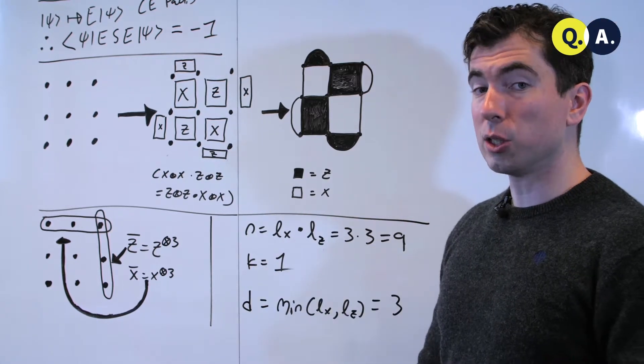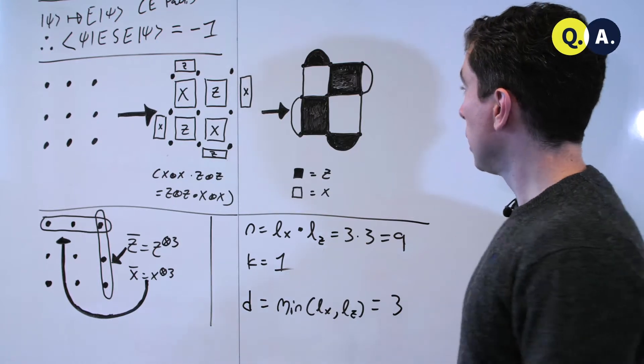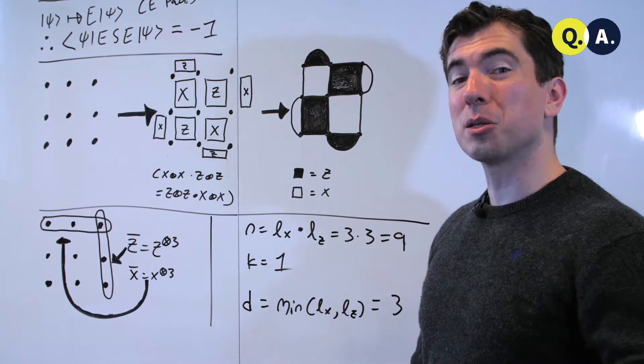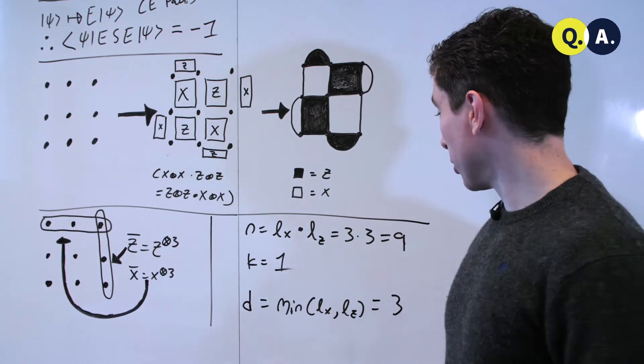k, the number of logical qubits, is always 1 for these codes. There are some ways to get k not to be 1, but they are too advanced to cover in this course.